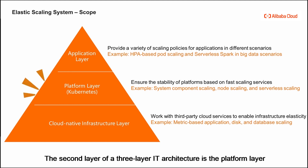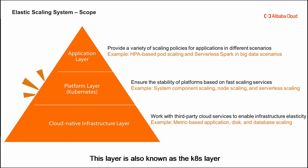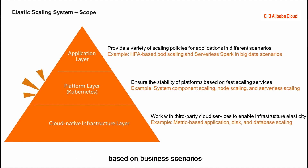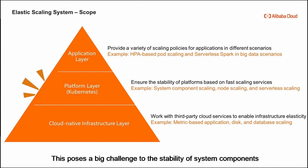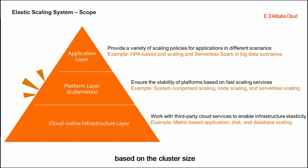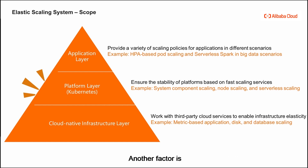The second layer of a three-layer IT architecture is the platform layer, also known as the K8S layer. The first factor to consider at this layer is the stability of system components. The size of a K8S cluster may change dynamically based on business scenarios, which poses a big challenge to stability. To address this, you can dynamically scale the replicas of some system components based on cluster size, ensuring high availability. Another factor is the stability of resource delivery at the platform layer.